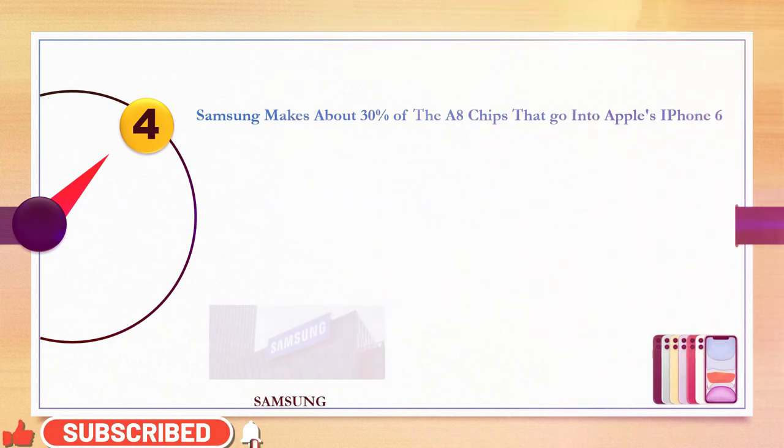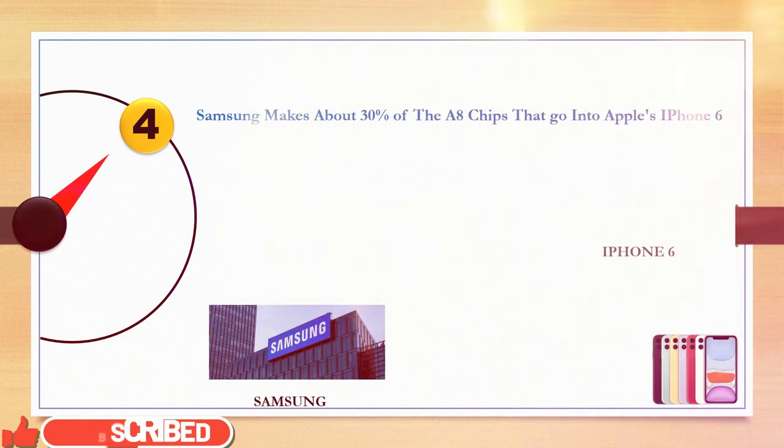Number 4. Samsung makes about 30% of A8 chips that go into Apple's iPhone 6.